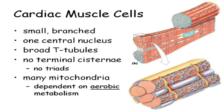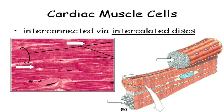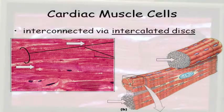Cardiac muscle cells do not do anaerobic metabolism very well. If you cut off the blood supply, heart muscle dies. And since cardiac muscle cells are not attached to bone — they're attached to each other — they're connected by these intercalated discs, these very protein-rich connections, because they essentially pull on each other.